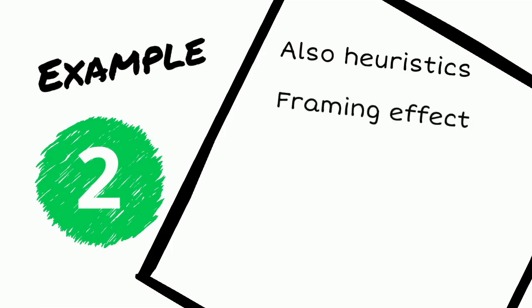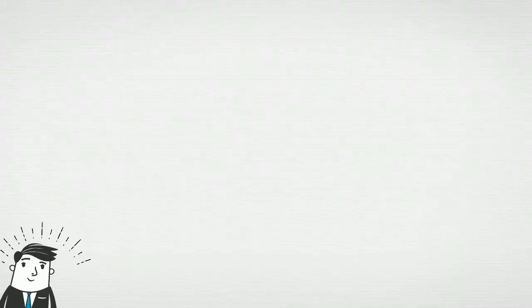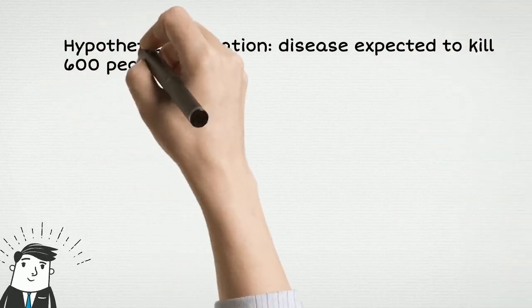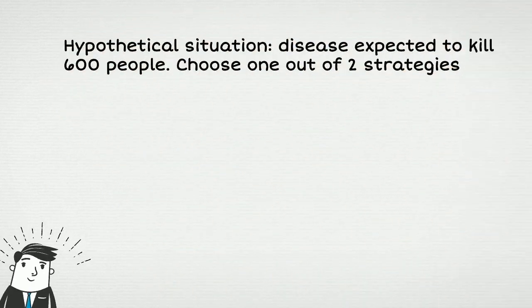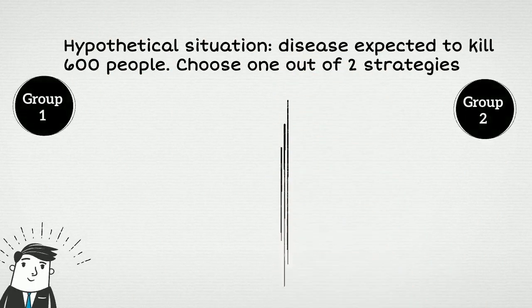In a famous experiment, Tversky and Kahneman asked a group of students to consider a hypothetical situation where there has been an outbreak of an unusual disease, which is expected to kill 600 people. The student has to assume the role of a decision maker who has to choose one of two strategies, depending on anticipated outcomes. Students in the experiment were randomly split into two groups, which were given an identical description of the hypothetical situation, but the predicted outcomes were different.